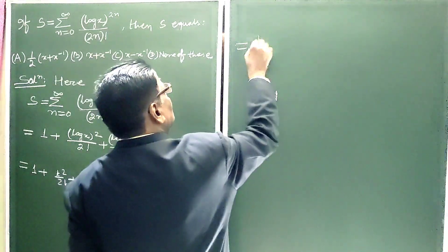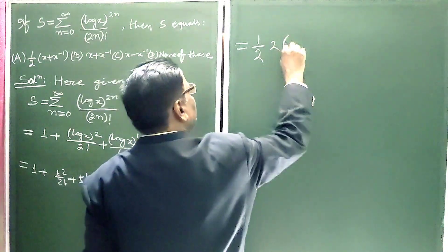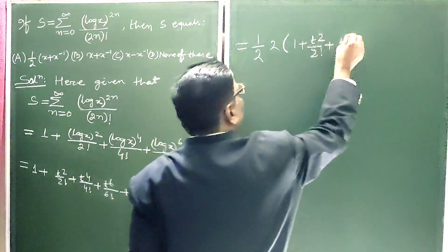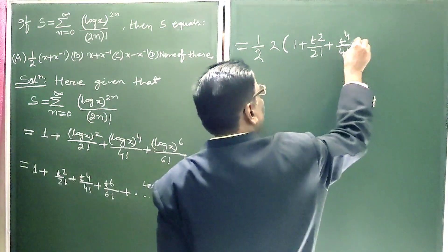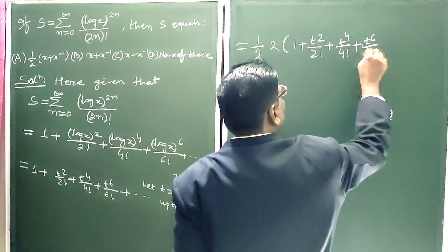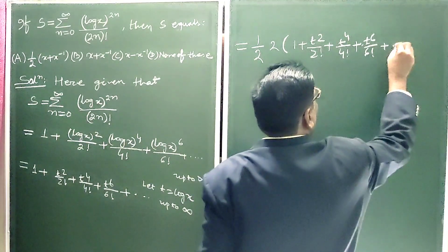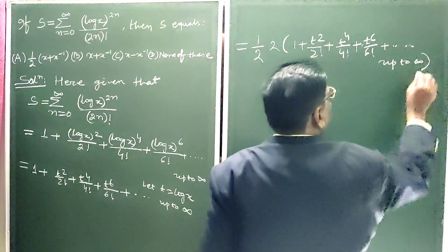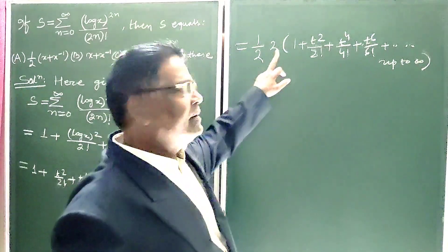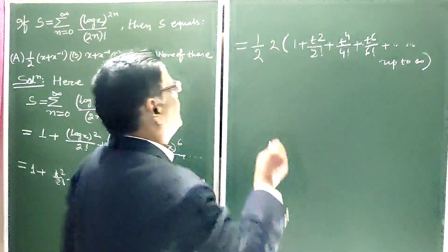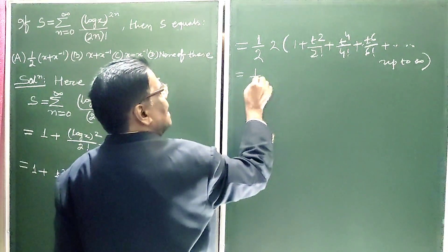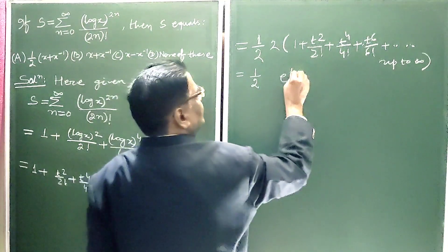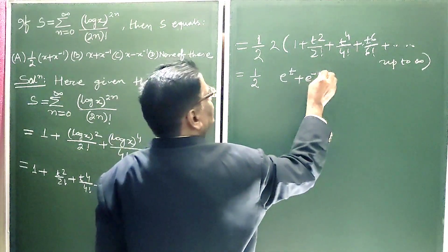This equals (1/2) times 2 into (1 plus t squared by 2 factorial plus t to the power 4 by 4 factorial plus t to the power 6 by 6 factorial plus dot dot dot up to infinity). We have just divided by 2 and multiplied by 2. This gives (1/2) times (e to the power t plus e to the power minus t).